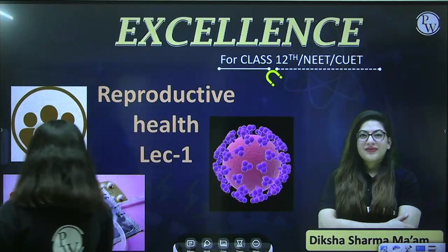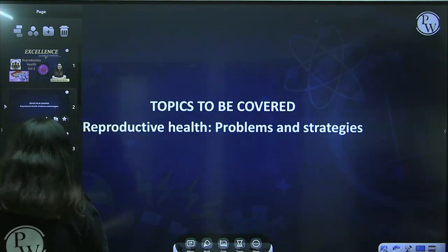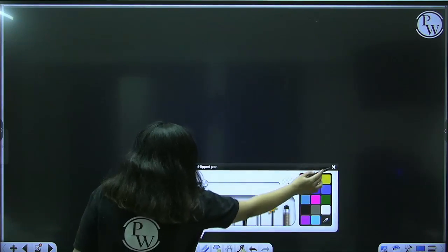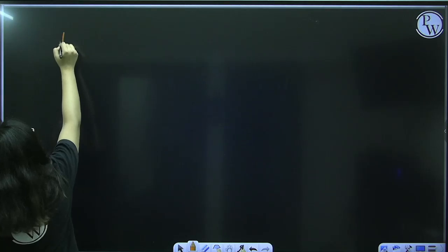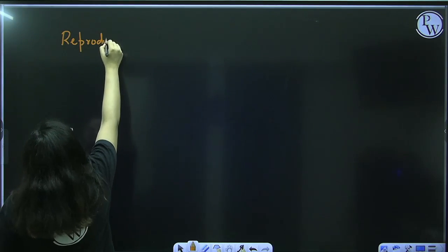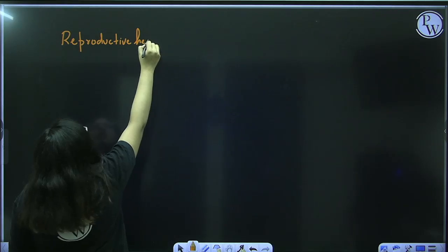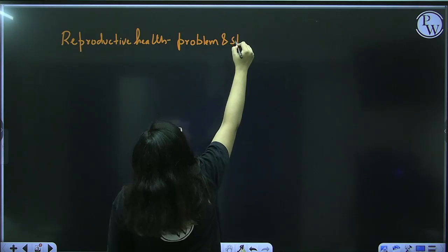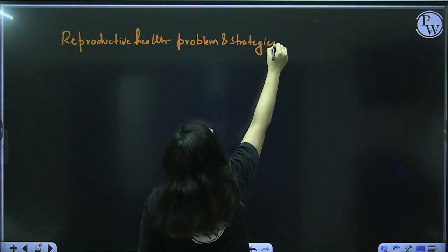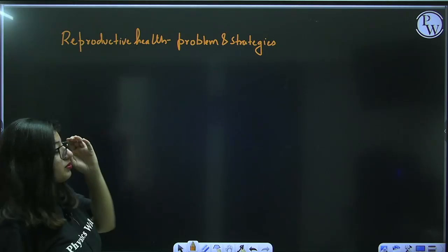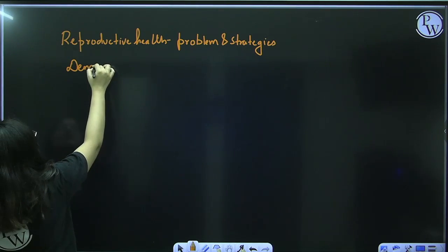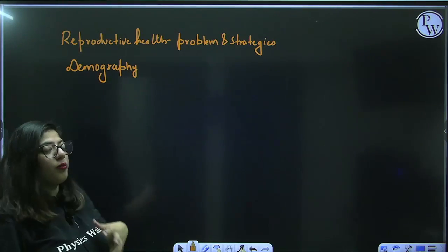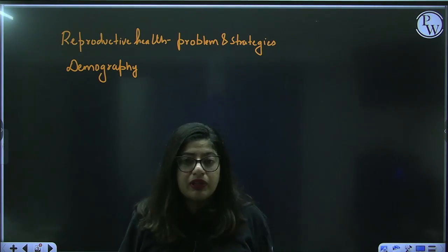Let me tell you the various parts of this chapter. First is the reproductive health introduction — what is reproductive health and what are the problems and strategies associated with it. The second part is demography, which is the study of population — how population is increasing and how it is affecting people.